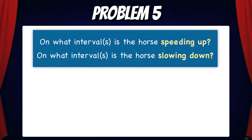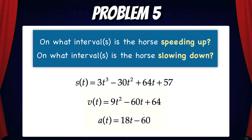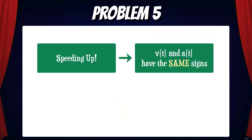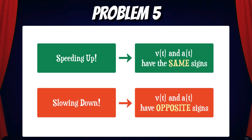Last problem: On what intervals is the horse speeding up, and on what intervals is the horse slowing down? To solve this we need to analyze the signs of the velocity and acceleration functions. The acceleration function is 18t minus 60, since it's the derivative of the velocity function. For an object to speed up, v(t) and a(t) must have the same sign. For an object to slow down, v(t) and a(t) must have opposite signs.